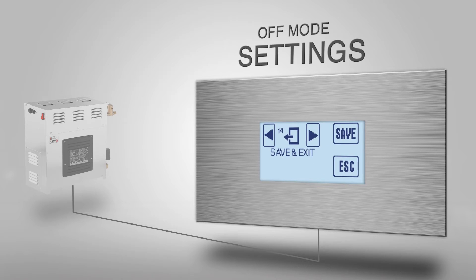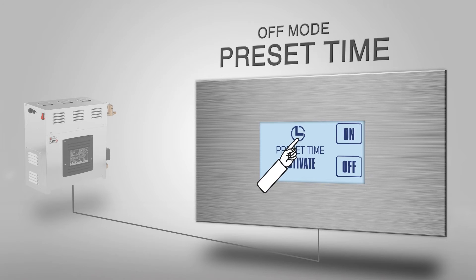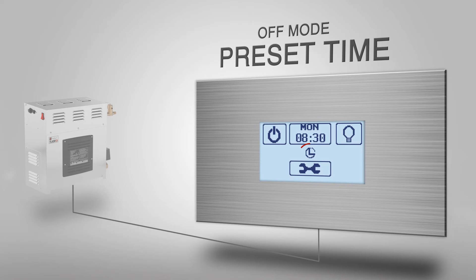Click save or ESC to get back to the start screen. Set a preset time beforehand so the steam room is ready to use when you want it to be. Long press the timer button in off mode to adjust the weekly timer, then set day and time. A small timer icon appears.